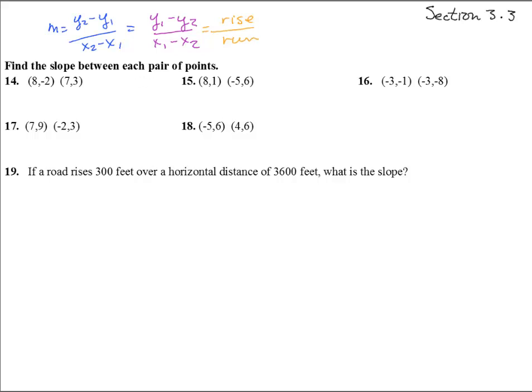So, let us begin. Slope here, we're going to take 3 minus negative 2 over 7 minus 8. That gives us positive 5 over negative 1. Simplifies to a negative 5 slope, or negative 5 over 1 if you'd like.